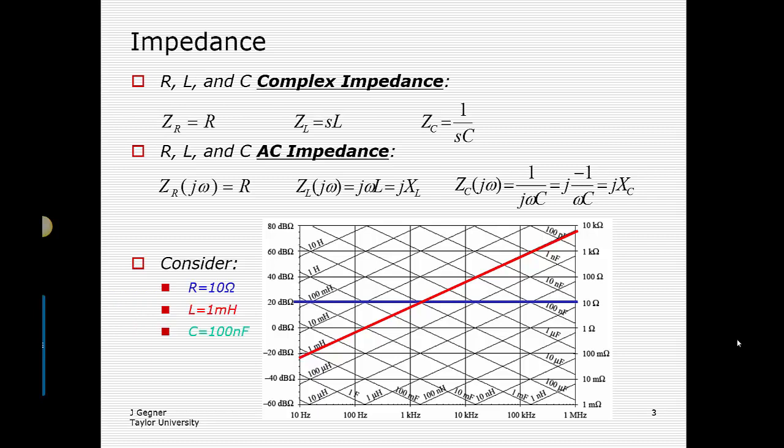For a 100 nanofarad capacitor, as the frequency increases the impedance actually goes down. I should note that on the reactance paper, what we are plotting is magnitude impedance — not imaginary or real separately. We're really plotting the reactance of the inductor xL and the reactance of the capacitor xC.